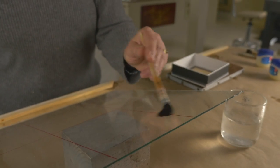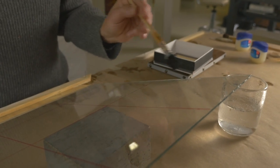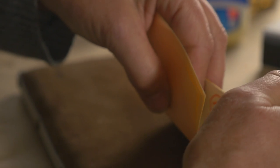Using a gilder's mop, apply gilder's size to a surface. Flatten a book to expose the gold leaf or lay the gold leaf on a gilder's pad.